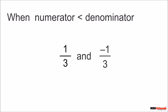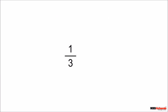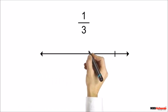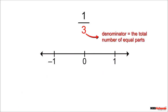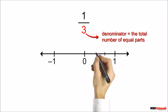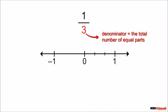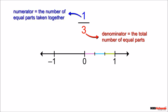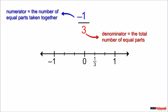When the numerator is less than the denominator, let's represent 1 upon 3 on a number line. In 1 upon 3 the numerator is less than the denominator, and when the numerator is less than the denominator the rational number lies between 0 and 1. So we draw a number line as shown. In 1 upon 3 the denominator tells us the total number of equal parts, so we divide the length between 0 and 1 into three equal parts. The numerator tells us the number of equal parts taken.